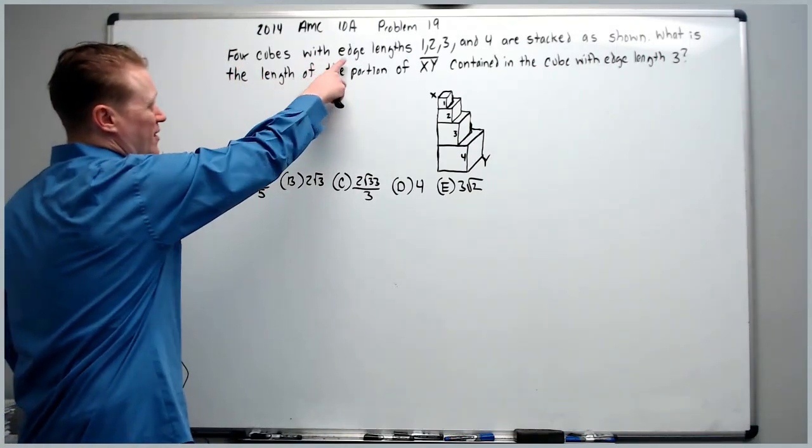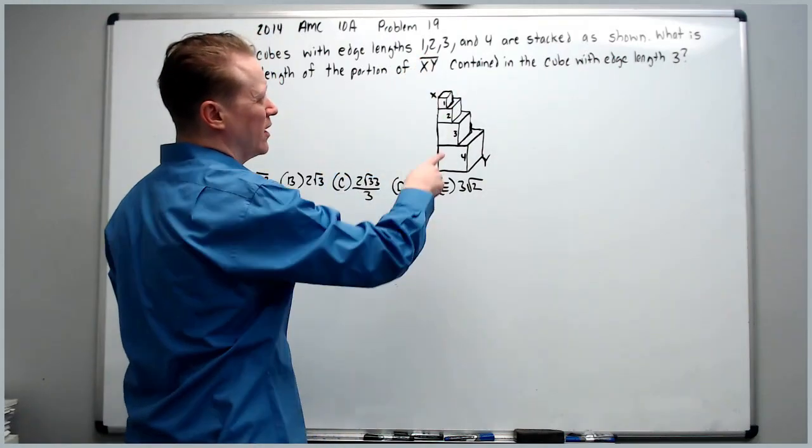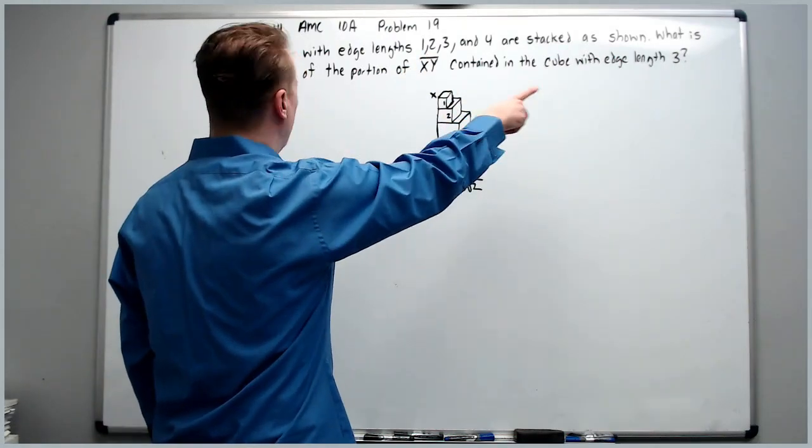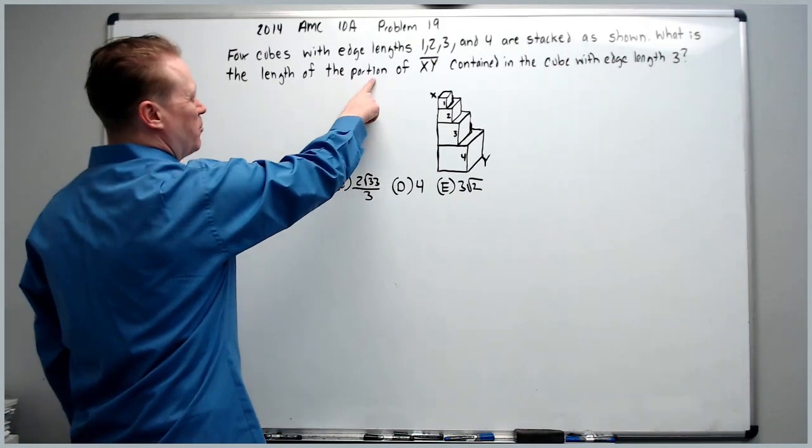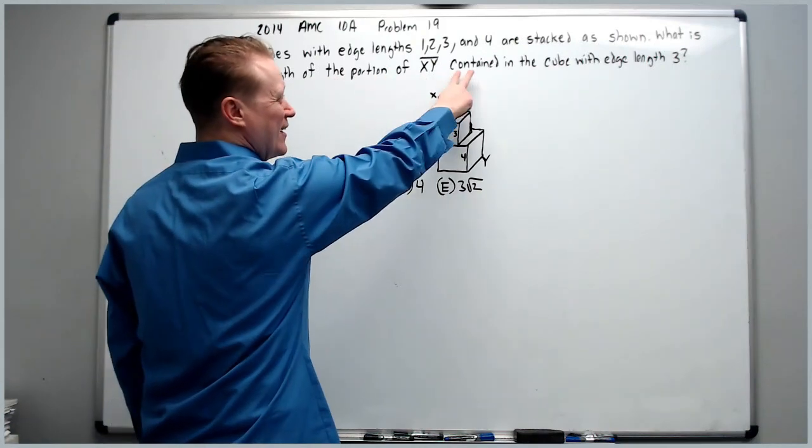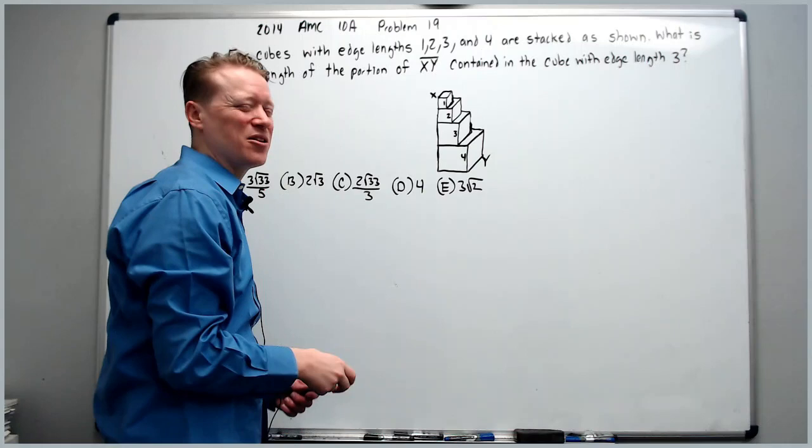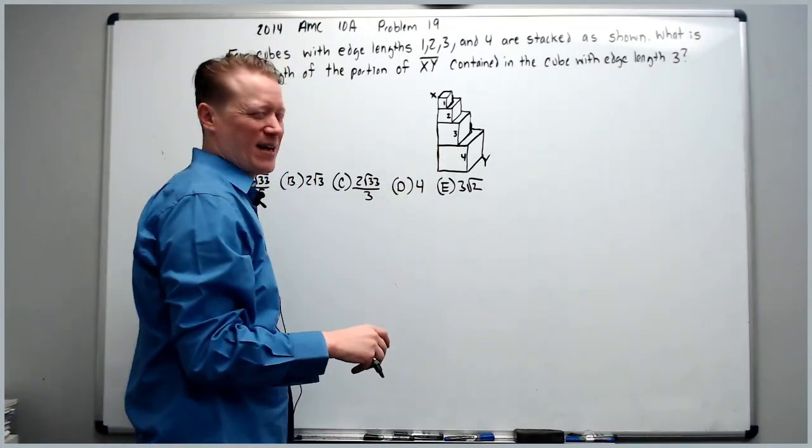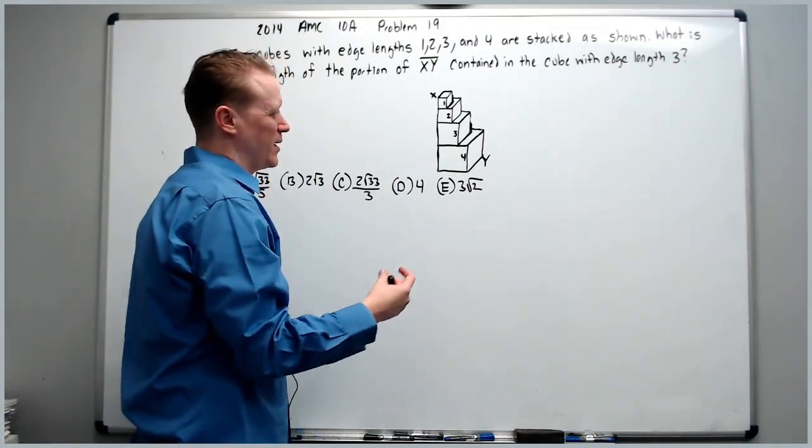Four cubes with edge lengths 1, 2, 3, and 4 are stacked as shown. What is the length of the portion of XY contained in the cube with edge length 3? I apologize for my not so great art skills, but it's okay.